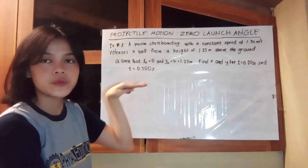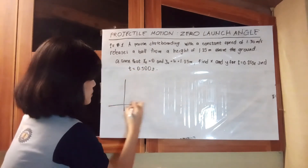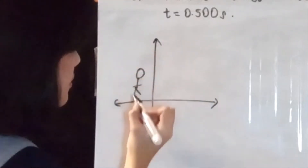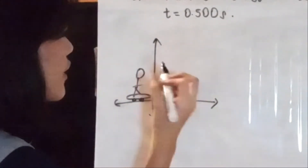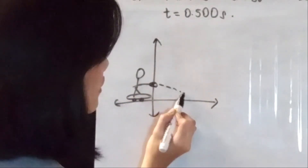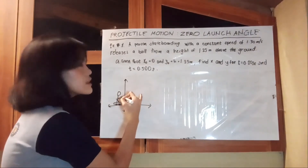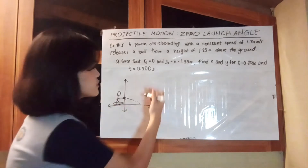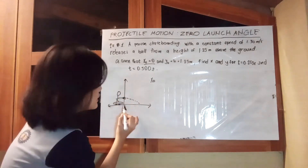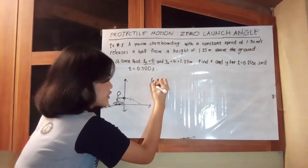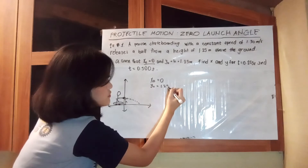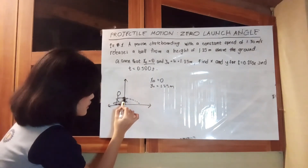Before we begin answering, let's first illustrate our problem. A person is here skateboarding, riding a skateboard, and here is the ball that he released, following a curved path. The release point of the ball will be our initial position. That is why x is equivalent to 0, because it is right above the origin of the x-axis. Our initial y position is the height, which is 1.25 meters.